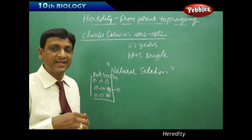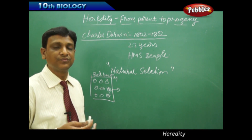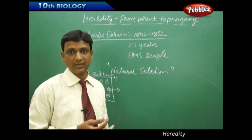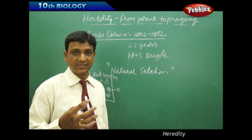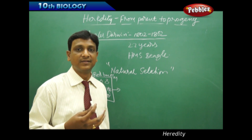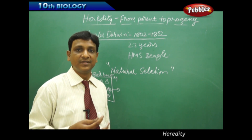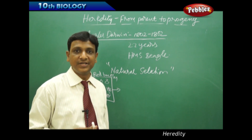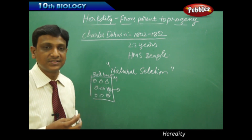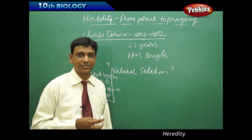In such a way, the variations that are developed in organisms — sometimes they will be useful and sometimes they may not be useful. The organisms that get useful variations will survive for further generations, while those that get variations which are not useful will be eliminated. This is the idea of natural selection.